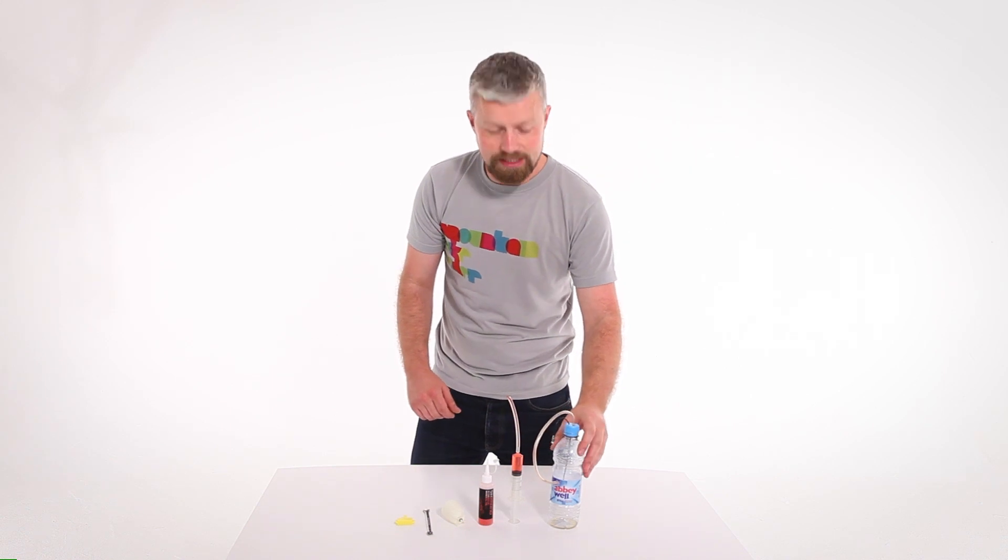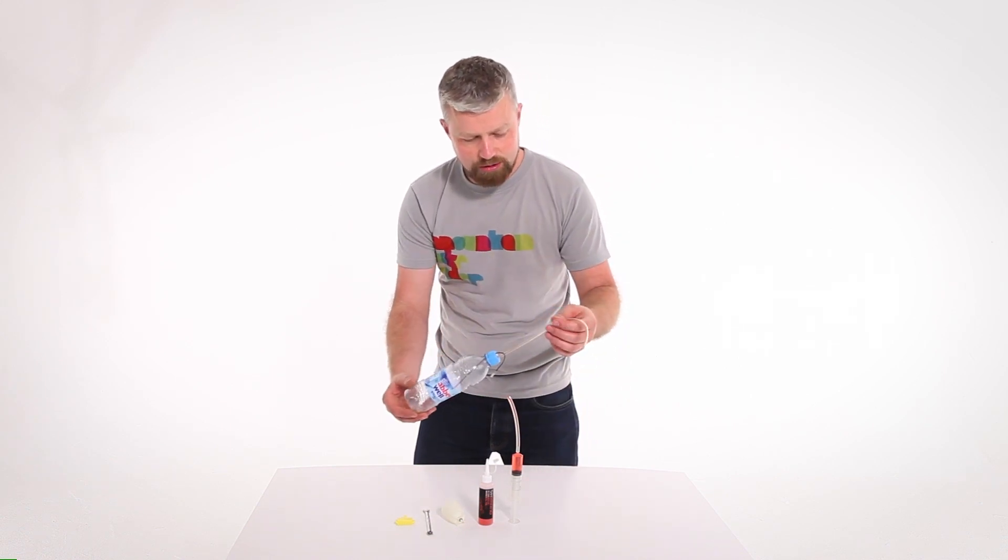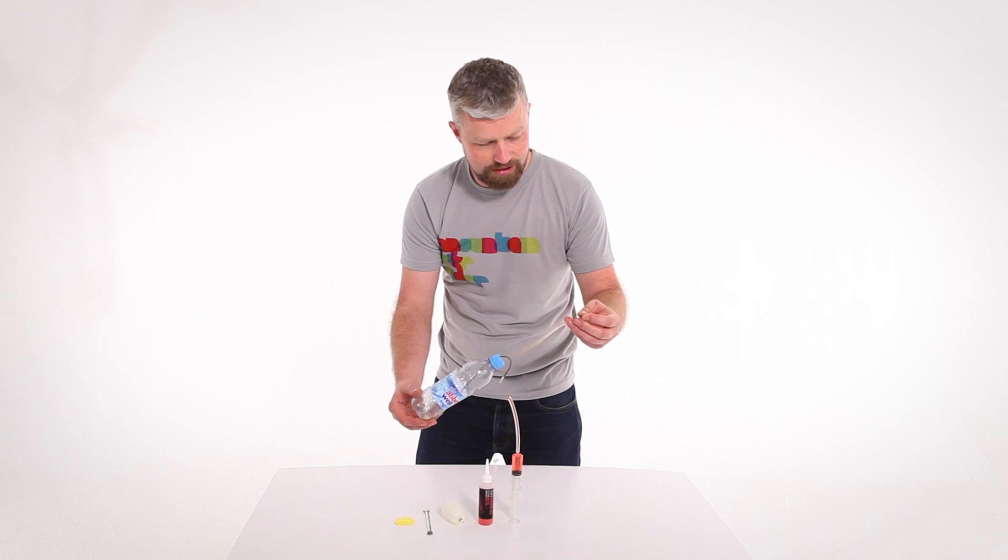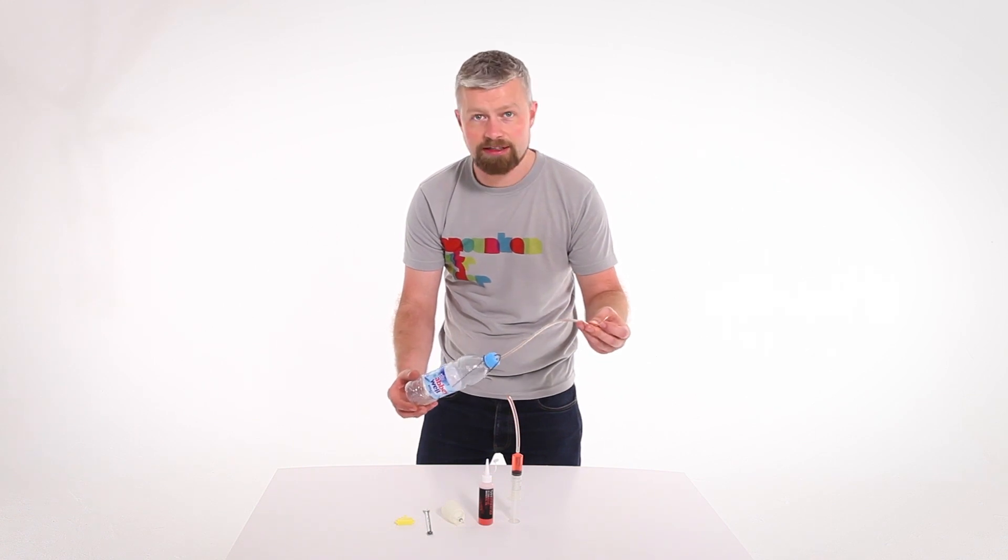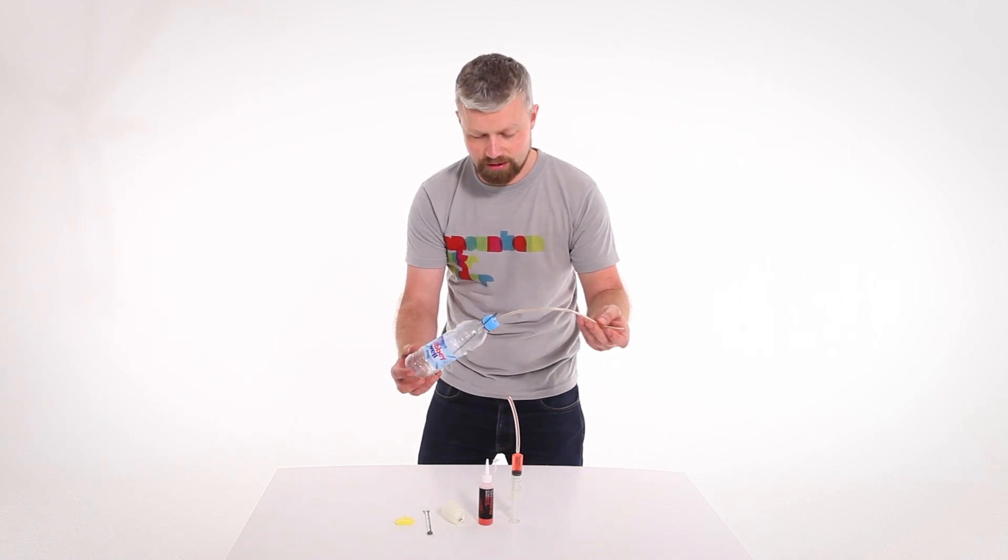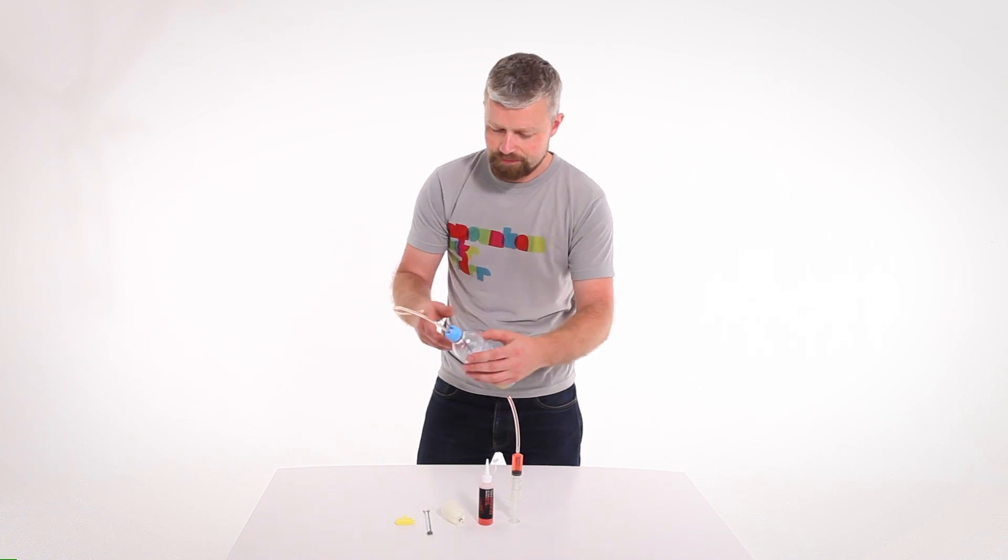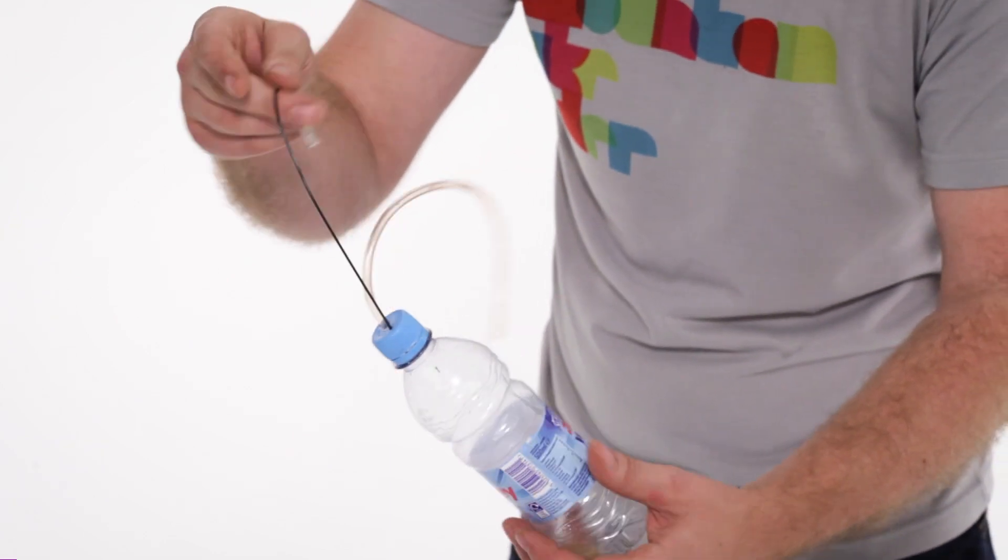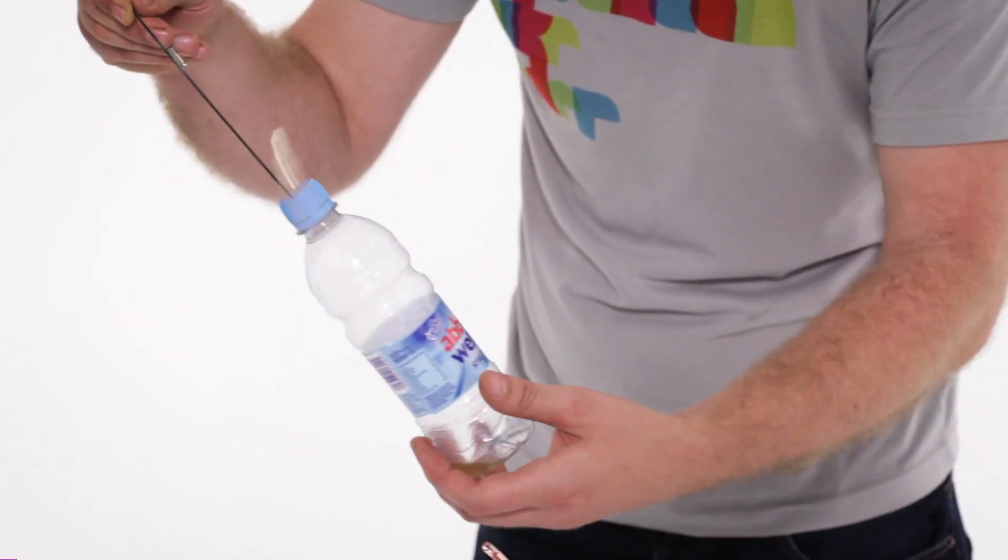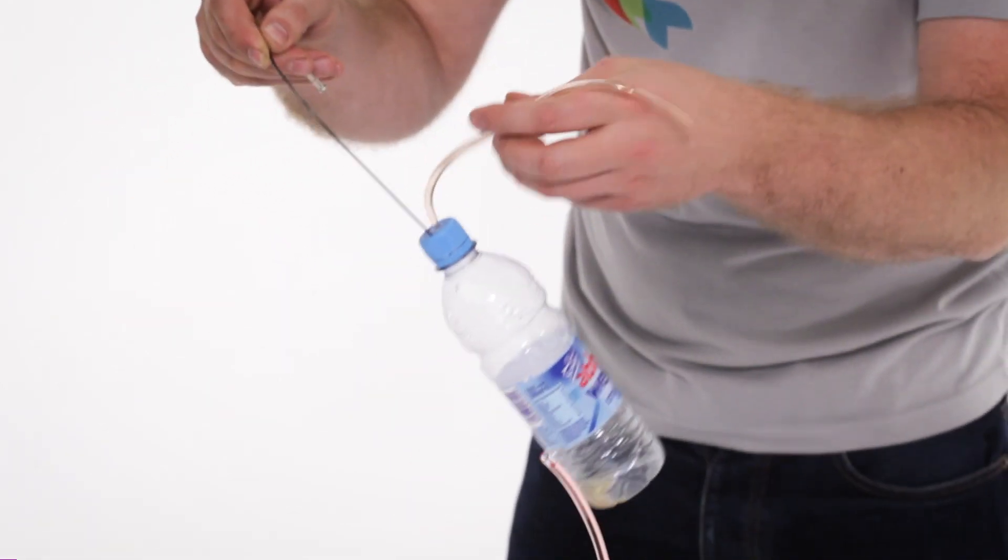And last but not least, whilst you can use a bit of hose and a bag, this is a much better contraption for catching the used brake fluid. Just a bent bit of wire. This is a spoke. An old drinks bottle. And a bit of hose.